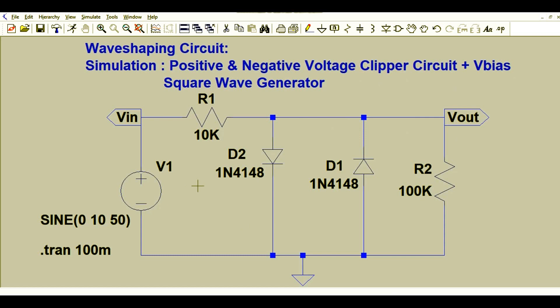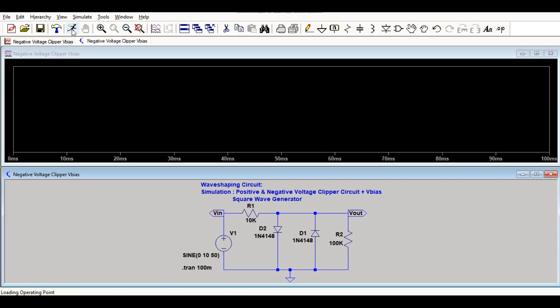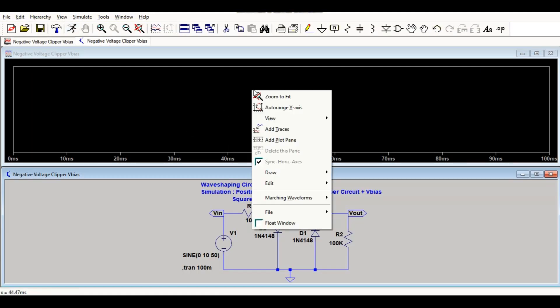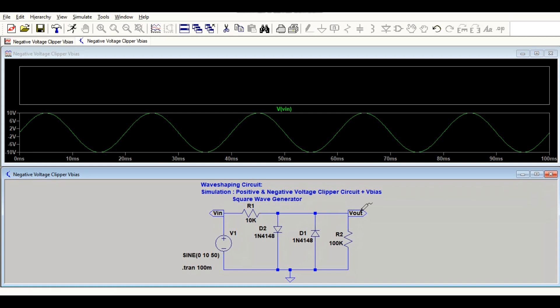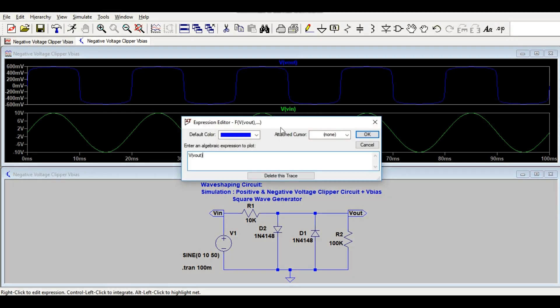So you have to run only the transient analysis. Let's run the transient analysis. Let's get to plot - this is for input and this is for your output. Let me change the color.